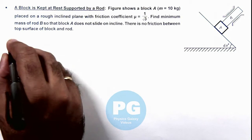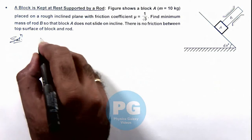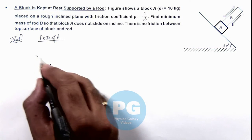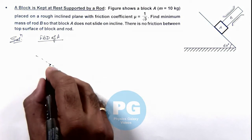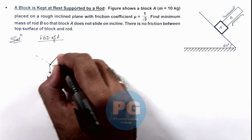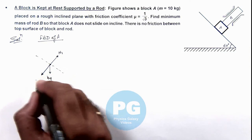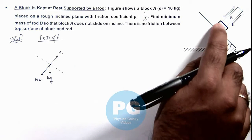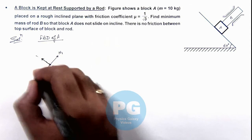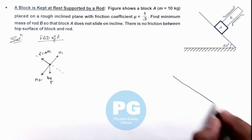We first draw the free body diagrams of block A and rod B. For block A placed along the incline, downward it experiences its weight mg. Due to the ground it experiences a normal reaction N1, and due to the weight of rod B it experiences another normal reaction N2. As block A has a sliding tendency in the downward direction, it experiences friction in the backward direction. To keep it at rest, the value of friction must be mu times N1.